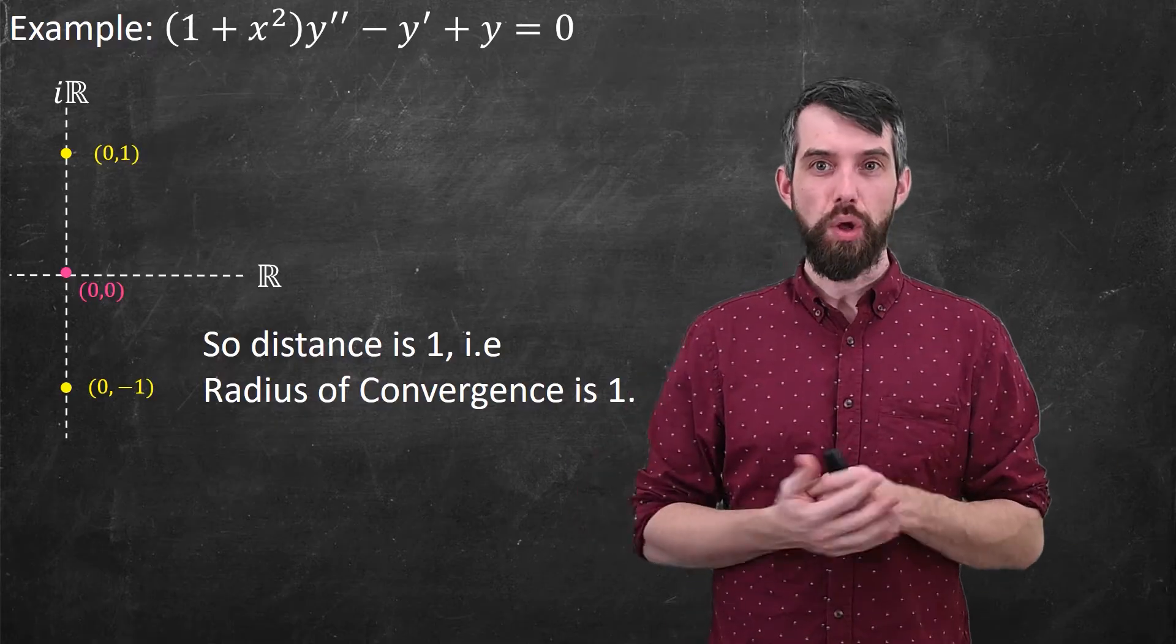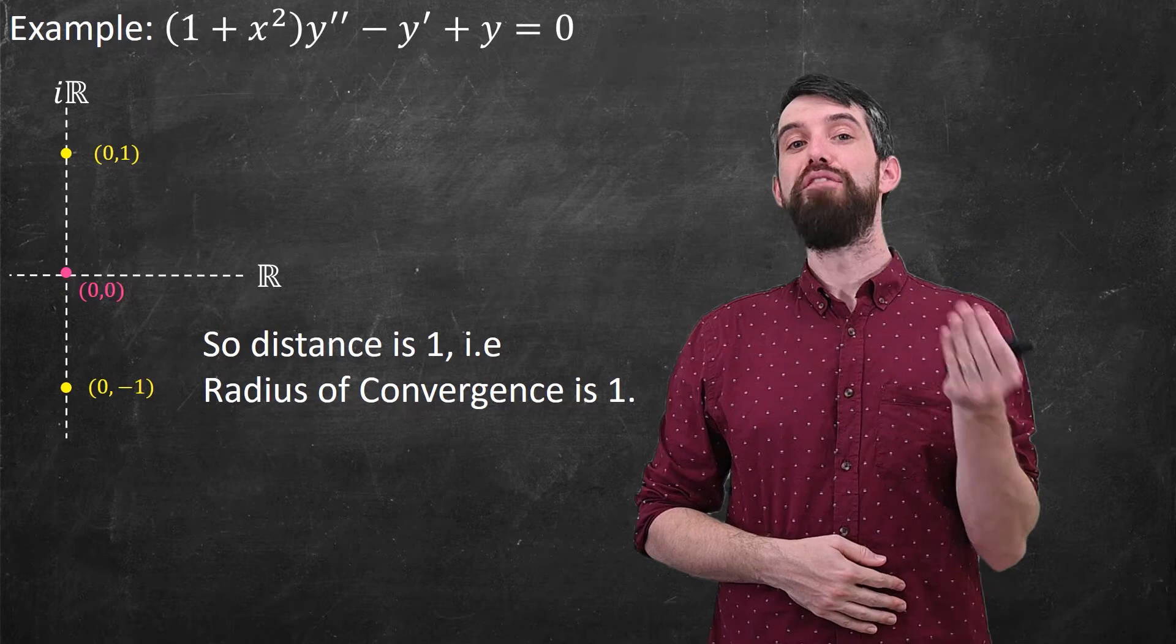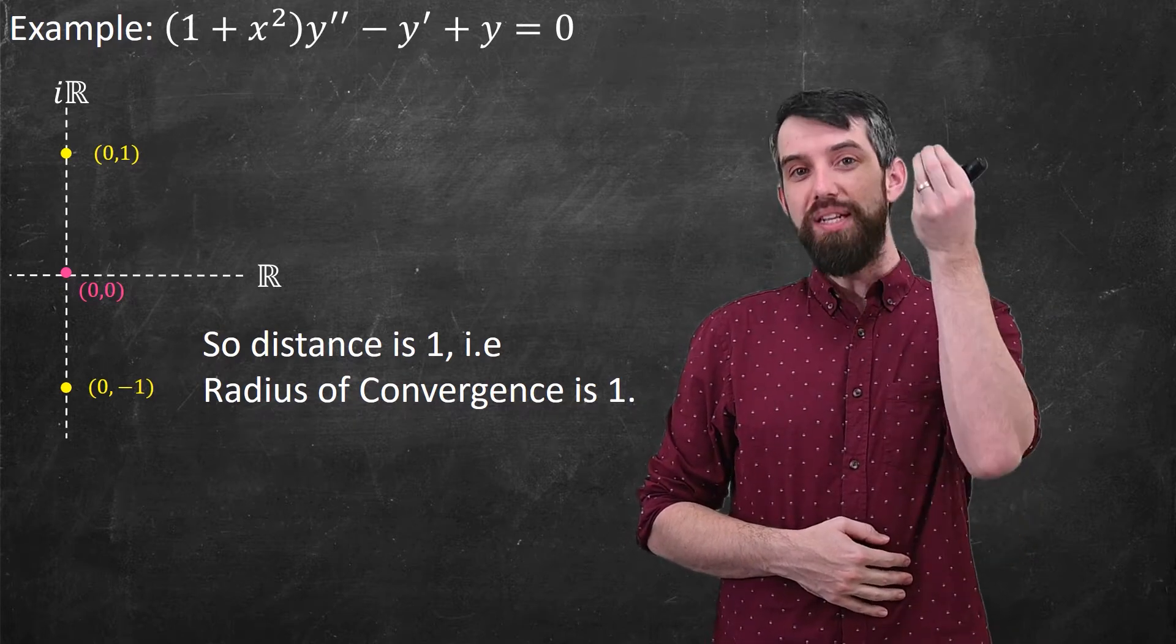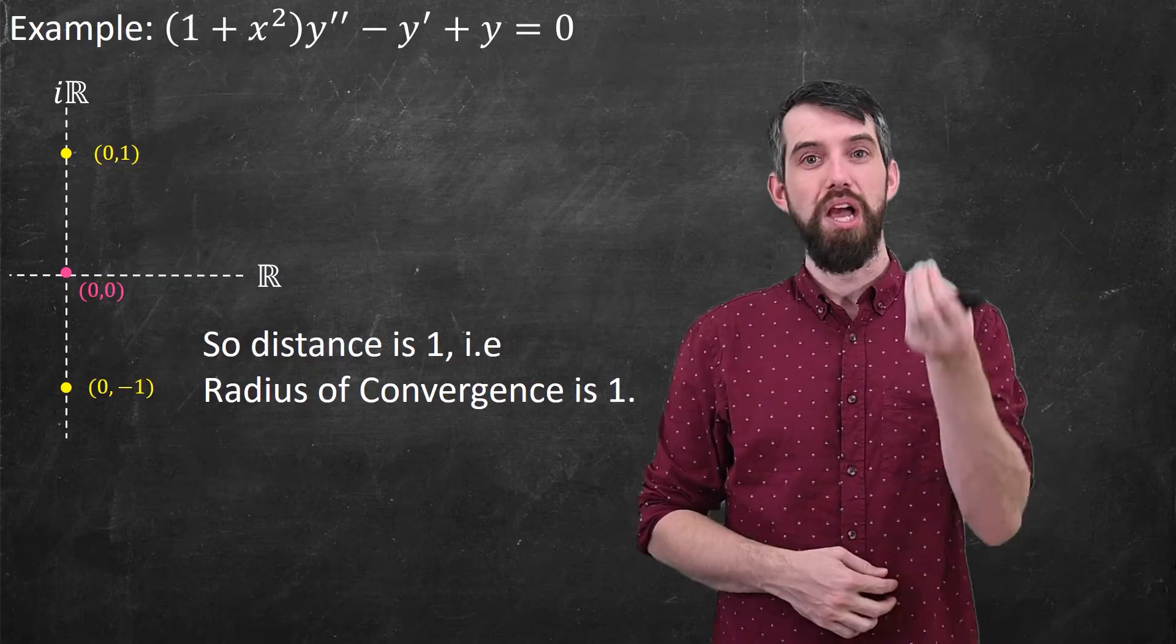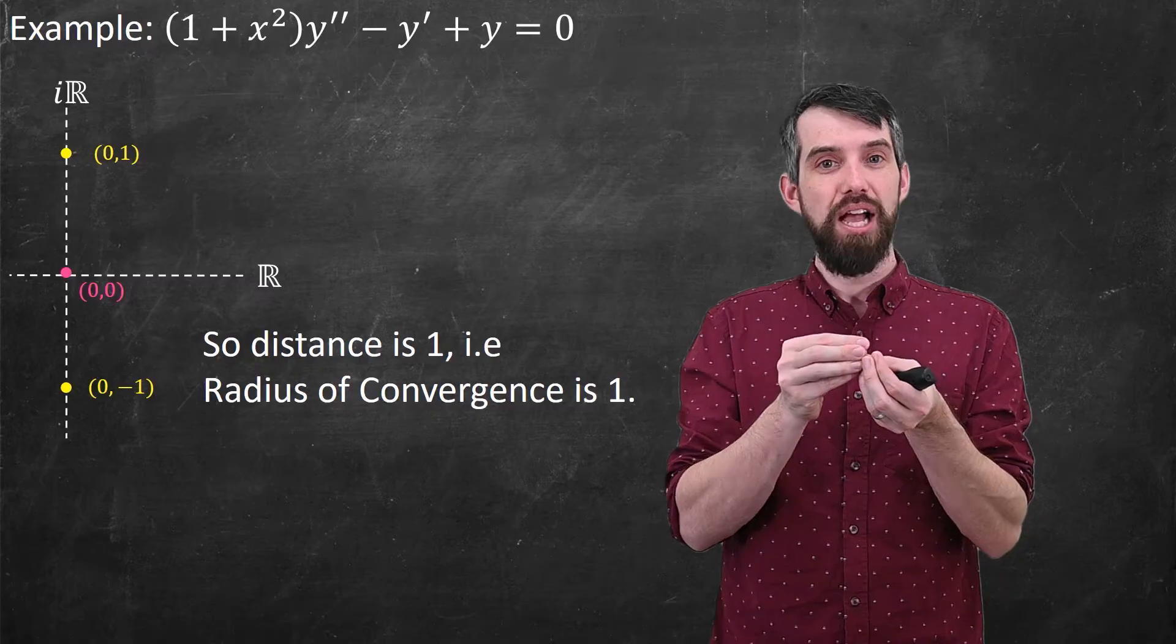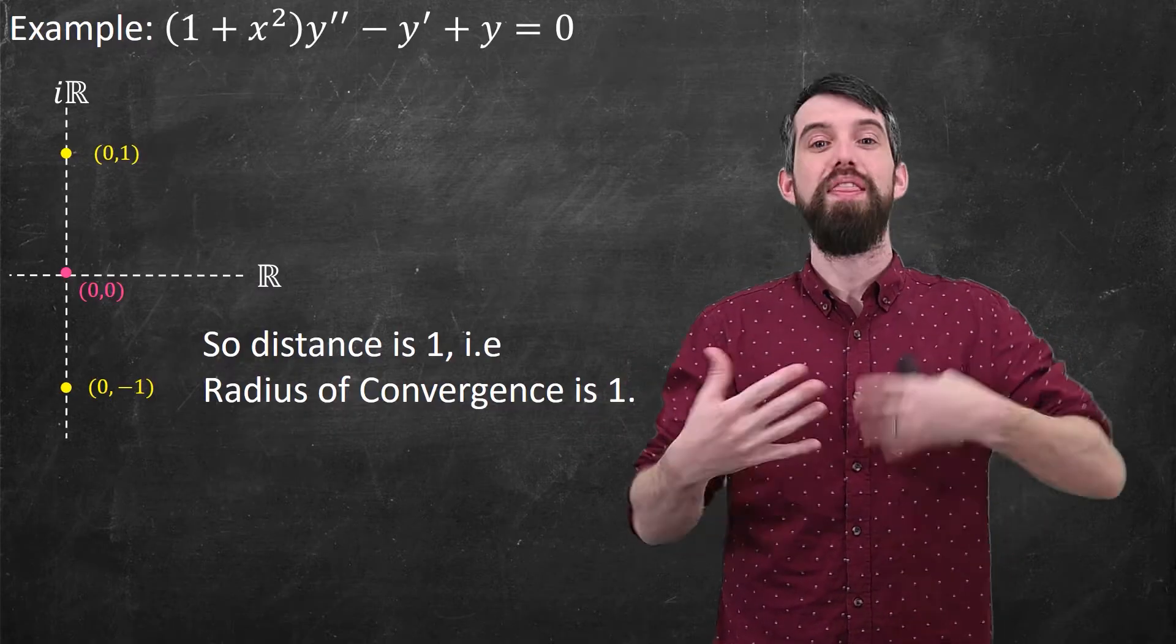So this is the basic methodology. You find all the singular points, then you look wherever you are interested in, often just a equal to 0, and you compute the distance in the complex plane from 0 out to your nearest singular point. And whatever that distance is, then you know that it converges within that distance.